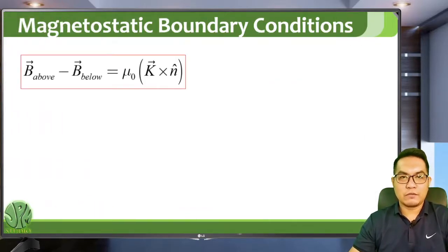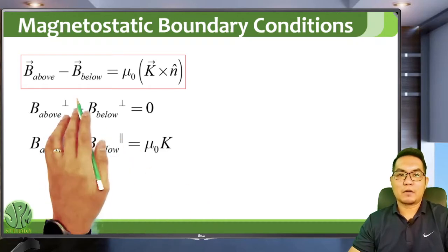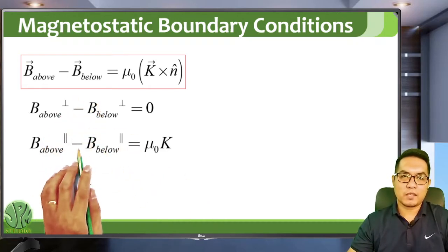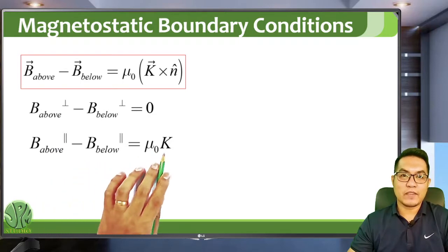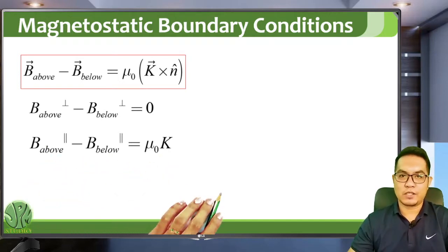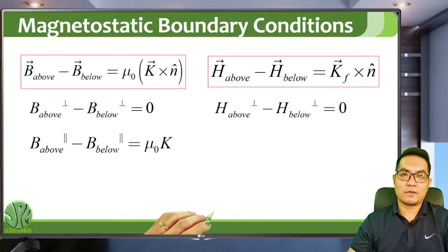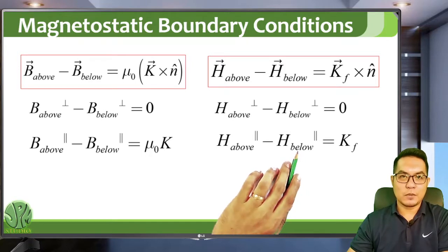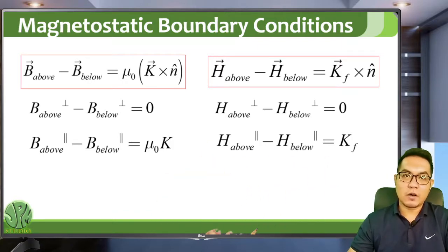Recalling the magnetostatic boundary conditions, the magnetic field is discontinuous if there are surface currents. The perpendicular component is not affected; only the parallel component is affected. The discontinuity in the parallel component of the magnetic field across a surface is equivalent to the surface current density. If there is no surface current density, the magnetic field is continuous. Similarly for the auxiliary field, it depends on the free surface current density — the auxiliary field is discontinuous if there are surface free currents, but continuous if there are none.